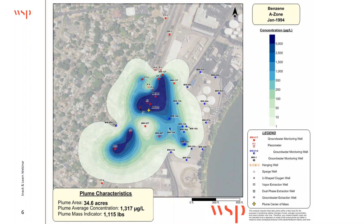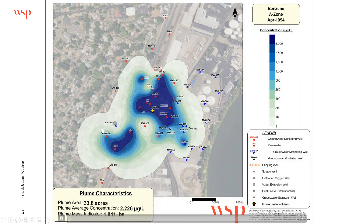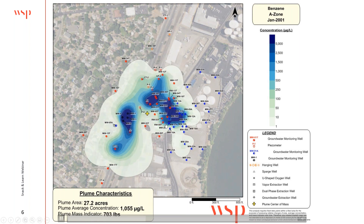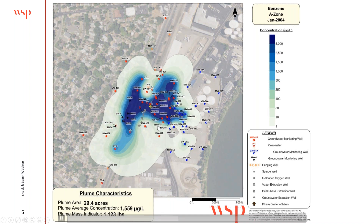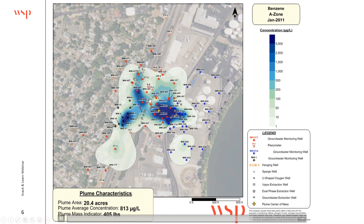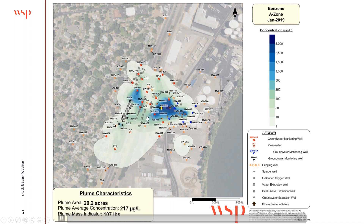What you're looking at is a benzene groundwater plume map. The site has two zones — an A zone and a B zone — and we'll focus on the A zone. The Ricker method looks at metrics shown at the bottom: aerial extent or footprint of the plume, average concentration as a spatial integration over the plume, and a mass indicator. We also track the center of mass. As I play this forward, you can see data back into the early nineties, with wells added over time and various remediation systems — extraction wells, soil vapor extraction, dual phase extraction, O2 injection — coming in as gray wells.